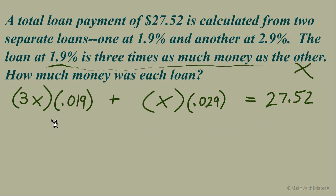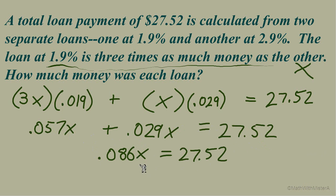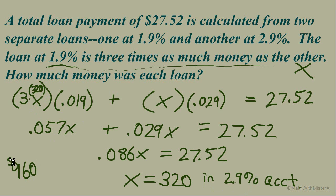Now we have an equation that we can solve. We don't need to distribute here. We're just multiplying a 3x, a single term, by another single term, this constant, 0.019. That will give us 0.057x. Here, 0.029x equals our total, 27.52. We've got some like terms we can combine on the left side. And lastly, to solve for x, we're dividing by 0.086. x equals 320. So in the 2.9% account, $320. So how much was in the 1.9% account? We had been using 3x. And now that we know that x equals 320, 320 times 3, $960 in the 1.9% account.